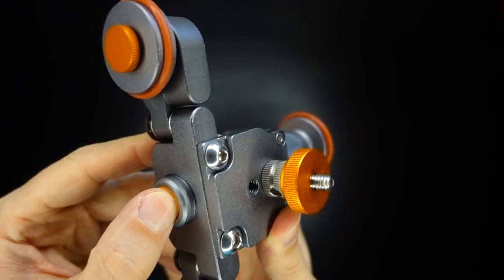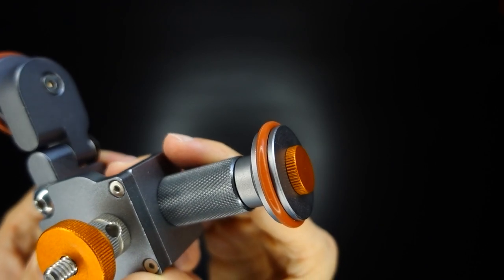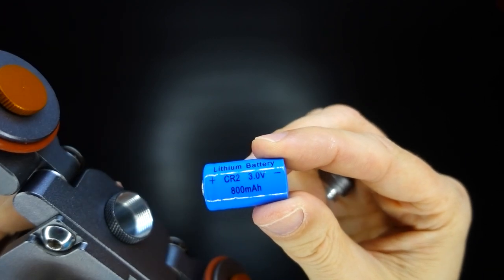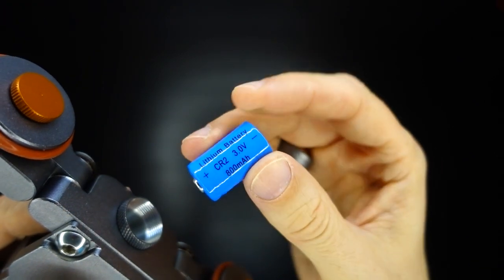A single button starts the wheel turning at a fixed constant speed, and it's powered by a single CR2 battery which is included in the box, and replacing it will set you back about three to five dollars.